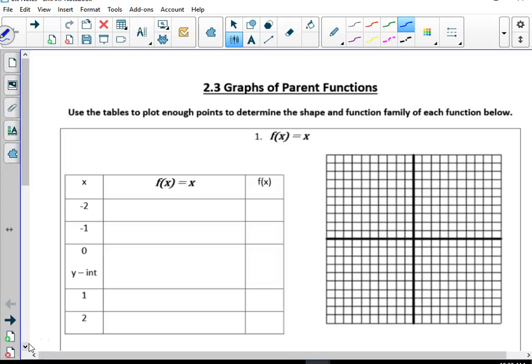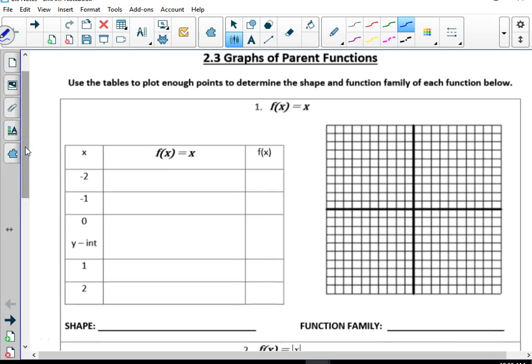Alright, 2.3. So this basically says the same thing as y equals x. Y is x, so there's really no math to do here. It's just negative 2 is negative 2, negative 1 is negative 1, 0 is 0, 1 is 1, 2 is 2. So we're gonna put those on there. So negative 2, negative 2, negative 1, negative 1, 0, 0, 1, 1, 2, 2, and then there's our line.